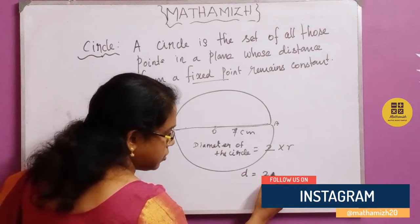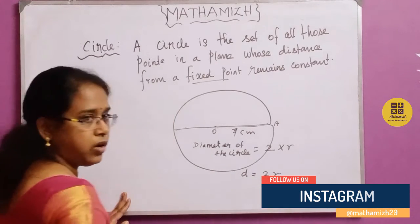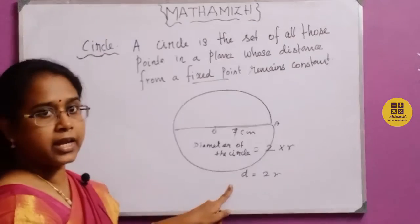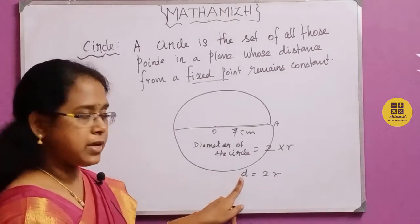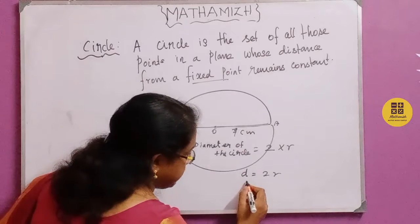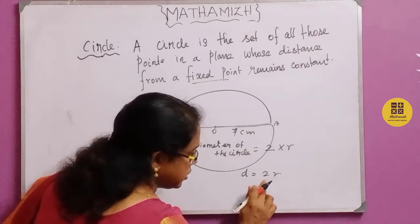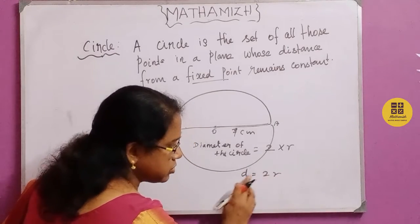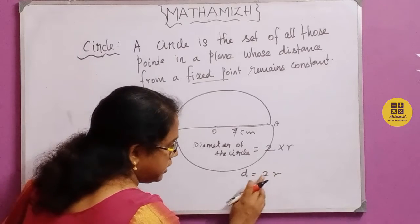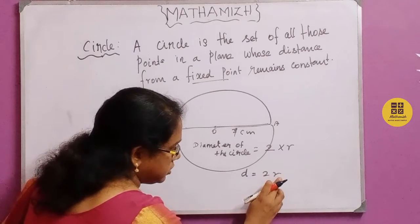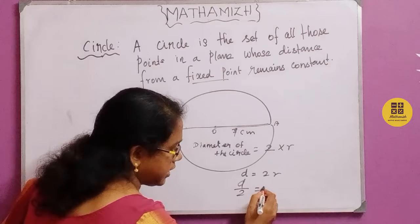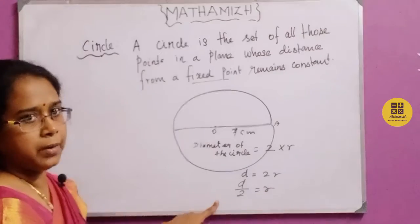So, diameter is equal to 2 into R. We can also express the radius in terms of the diameter: radius is equal to D by 2.